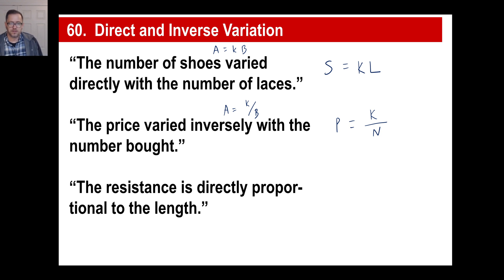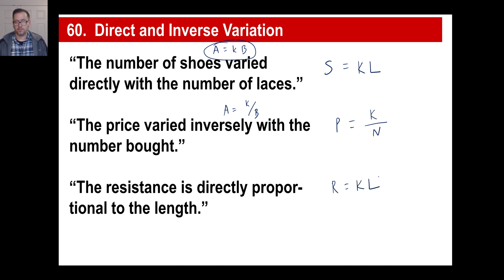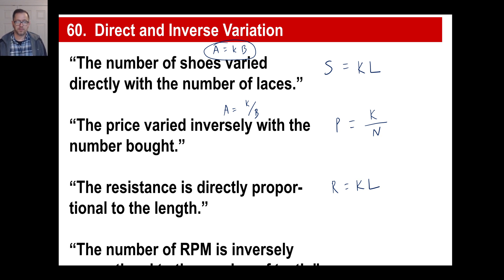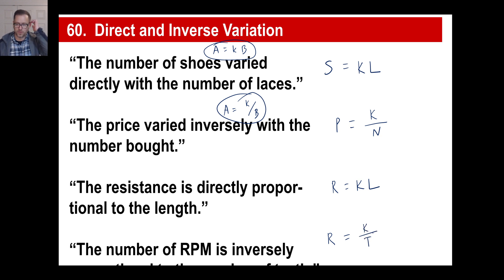The resistance is directly proportional to the length — that's direct, so resistance equals K times the length; it's multiplication. The number of RPM is inversely proportional to the number of teeth: the more teeth in a piece of machinery, the slower the RPM. Since it's inverse, RPM equals K divided by the number of teeth.